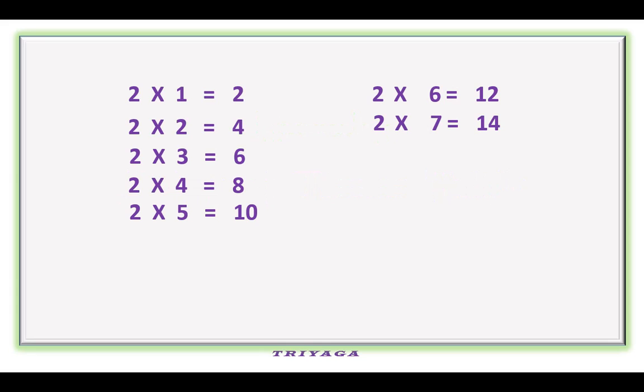2 1s are 2, 2 2s are 4, 2 3s are 6, 2 4s are 8, 2 5s are 10, 2 6s are 12, 2 7s are 14, 2 8s are 16, 2 9s are 18, 2 10s are 20.